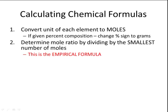Once you have both elements in the unit of moles, you need to determine the mole ratio. To determine the ratio, you divide by the smallest number of moles. If you're solving for empirical formula, you can simply stop here, because the empirical formula is the same as the mole ratio of the atoms. But if you're asked to solve for molecular formula, there are a couple more steps.